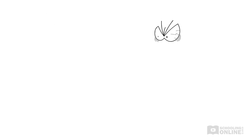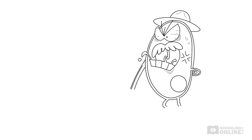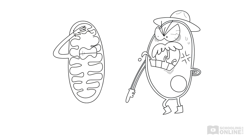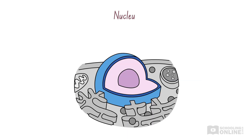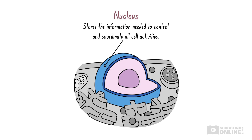Now, how do the organelles cooperate in such an orderly fashion? Let's see what the nucleus does. The nucleus is an organelle that stores the information needed to control and coordinate all cell activities, including cell replication, growth and repair.